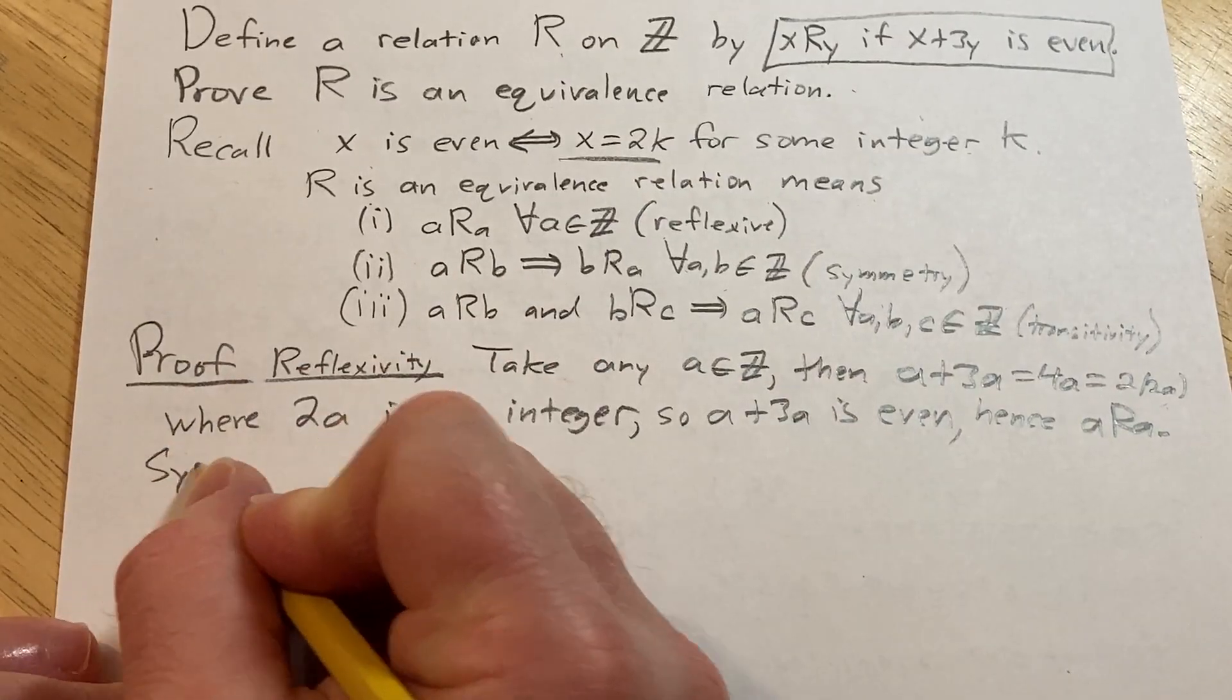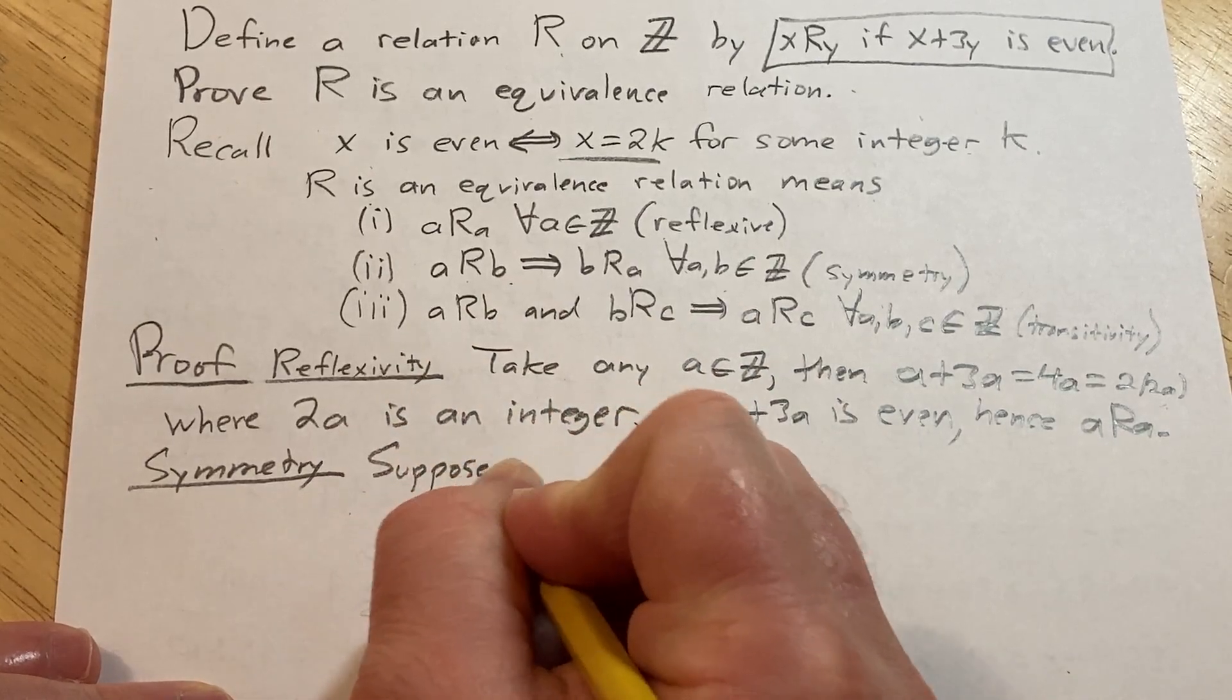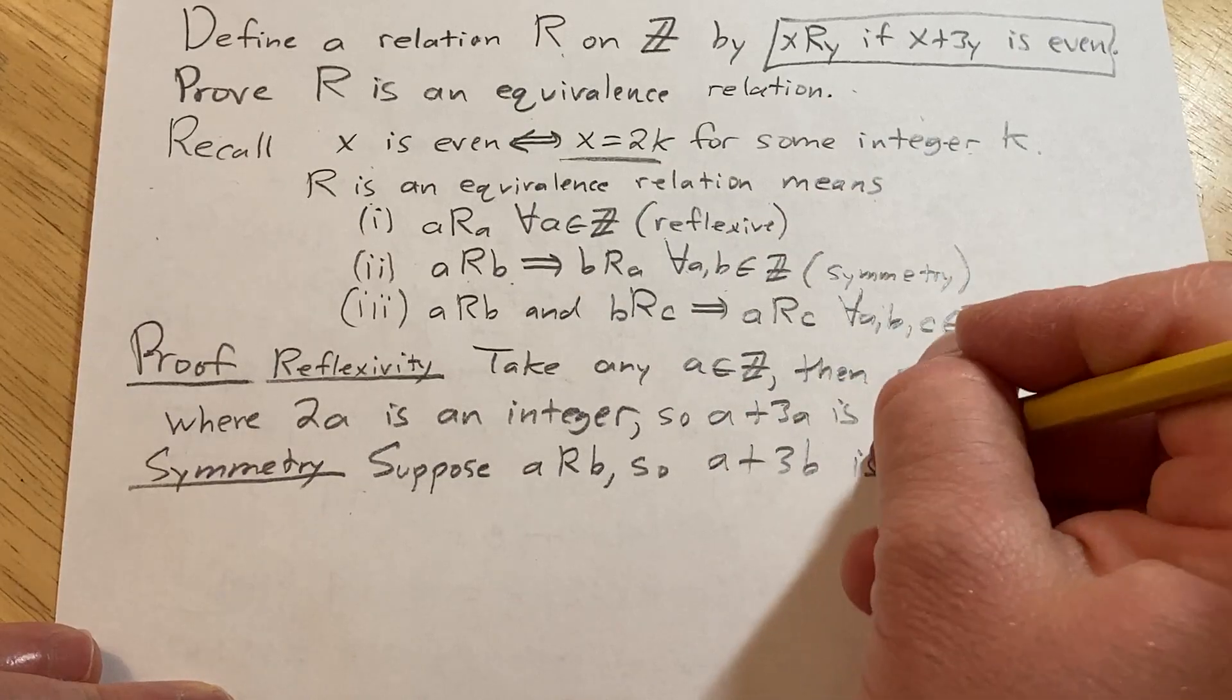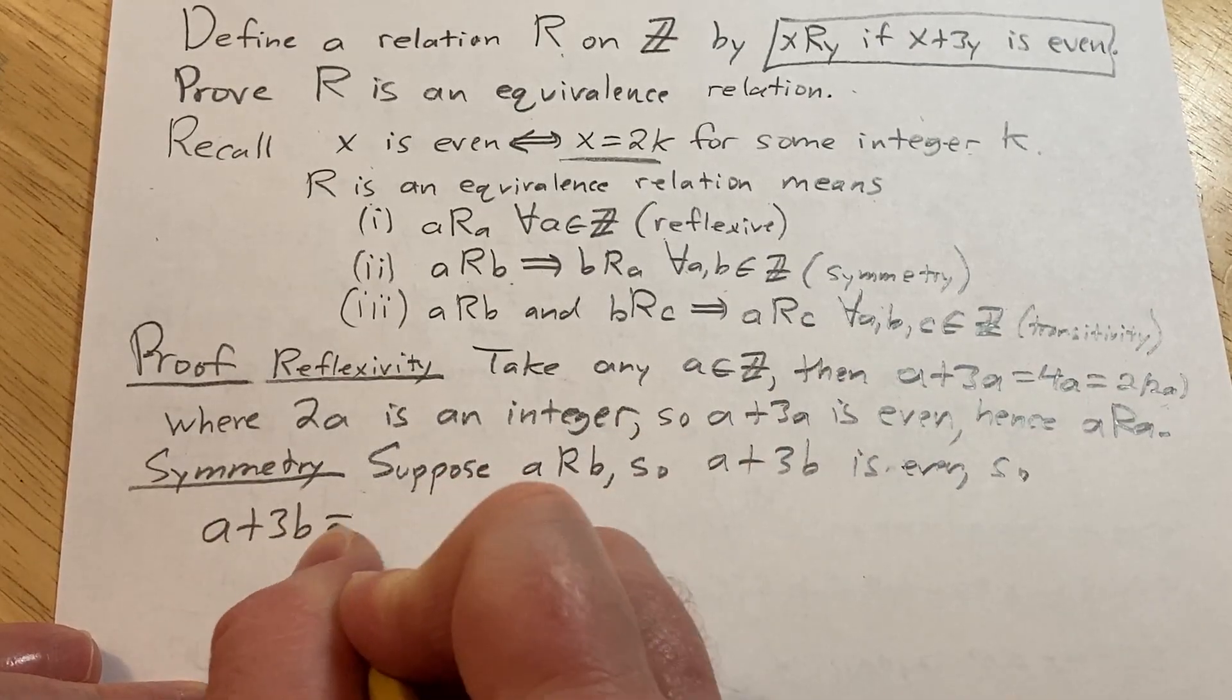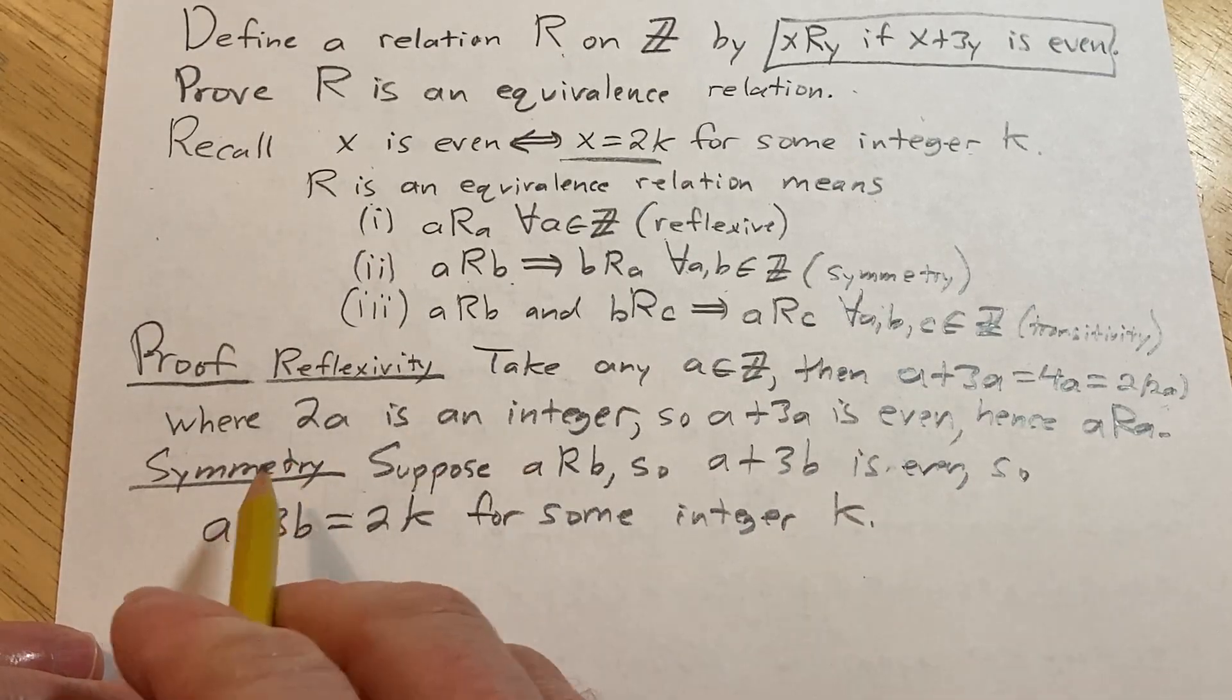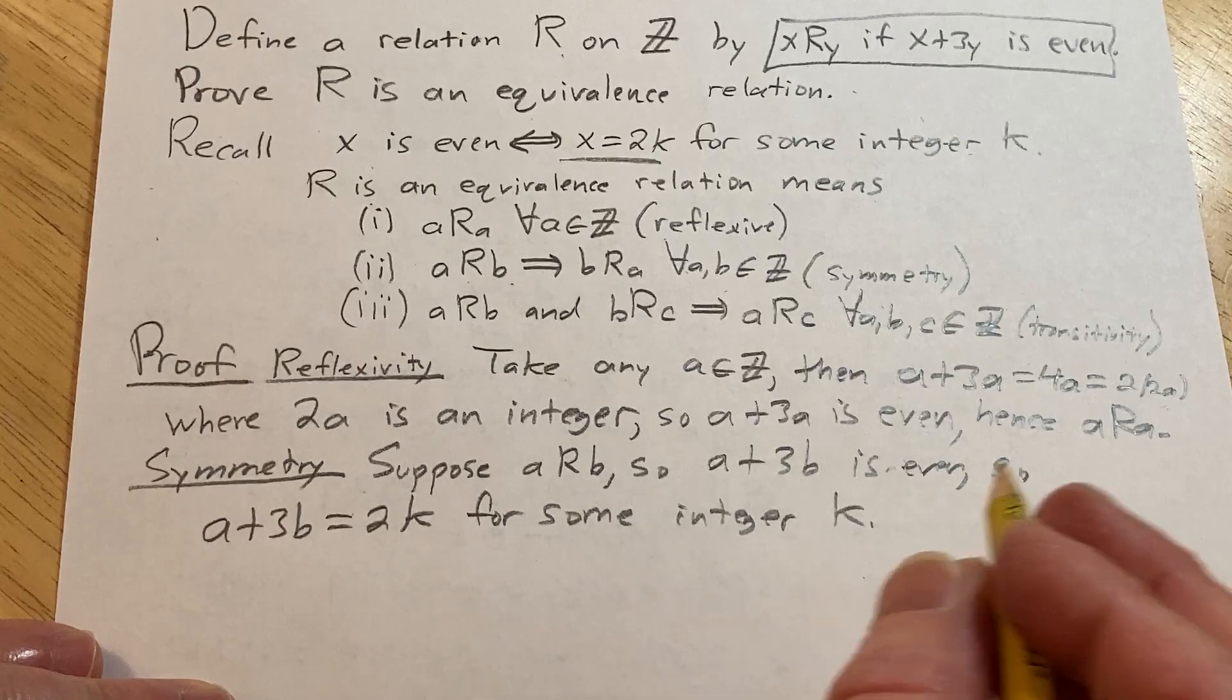Let's do symmetry. For symmetry we assume that a is related to b and we have to show b is related to a. So suppose that a is related to b. That means that a plus 3b is even. So a plus 3b is a multiple of 2, so it's equal to 2 times some integer which I'll call k, for some integer k. Now we have to show that b is related to a, that would mean that b plus 3a is even.